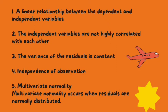Five, multivariate normality. Multivariate normality occurs when residuals are normally distributed. To test this assumption, look at how the values of residuals are distributed.